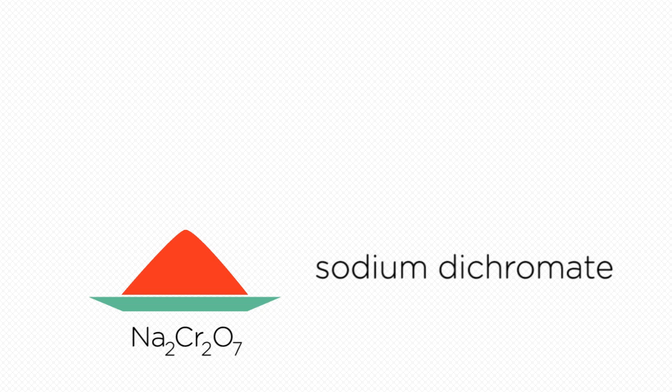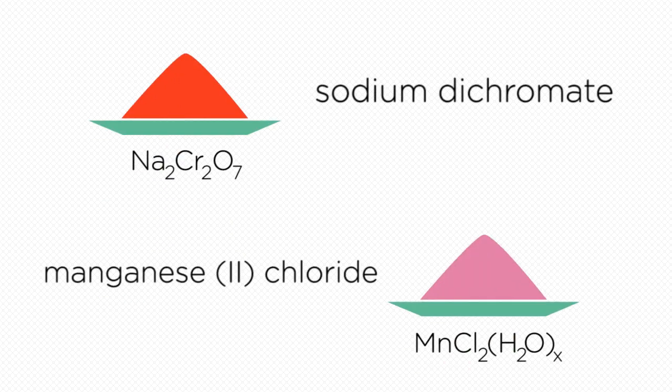In a real reaction, chromium and manganese ions are parts of compounds like sodium dichromate and manganese chloride. This can often make it more difficult to see what is being oxidized and what is being reduced.